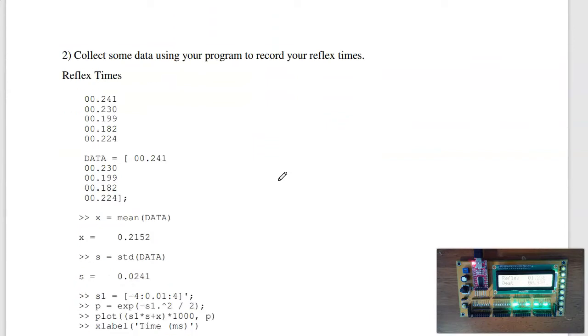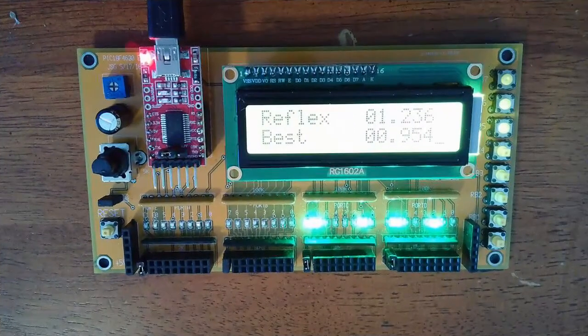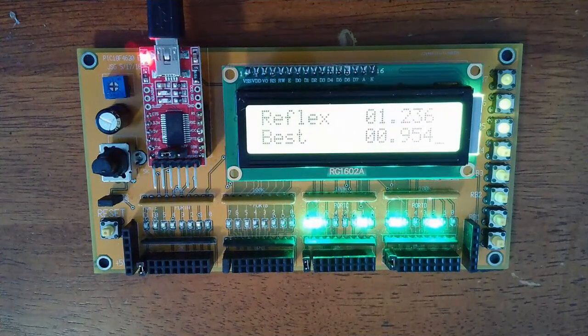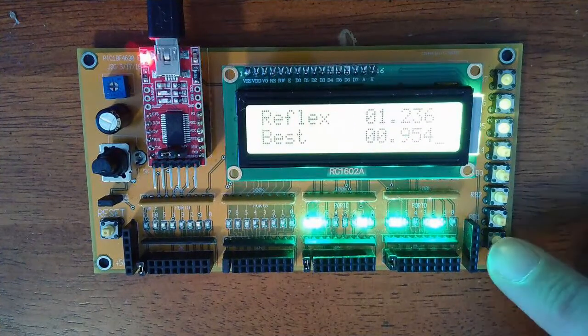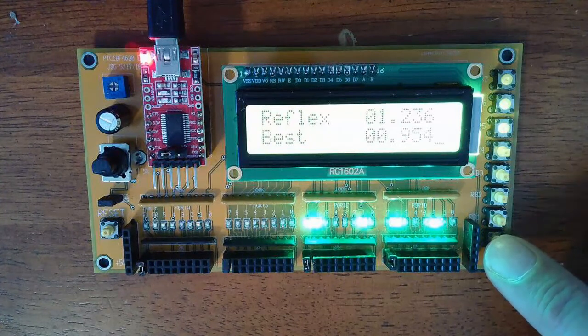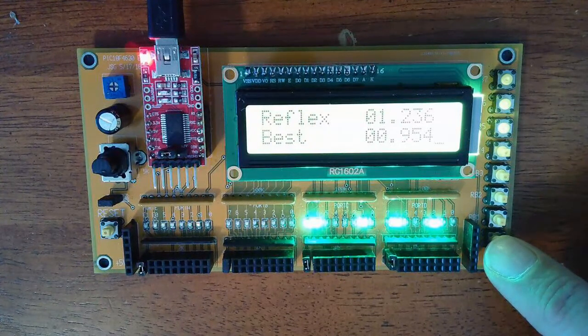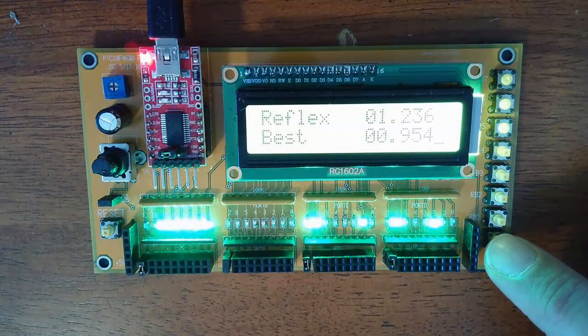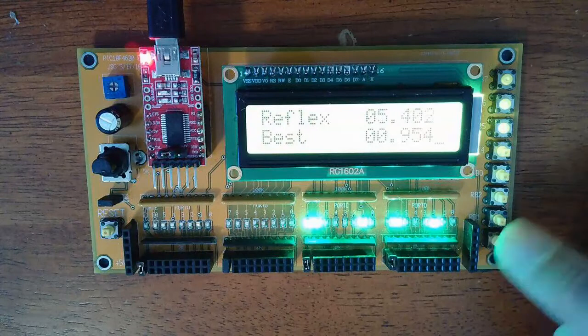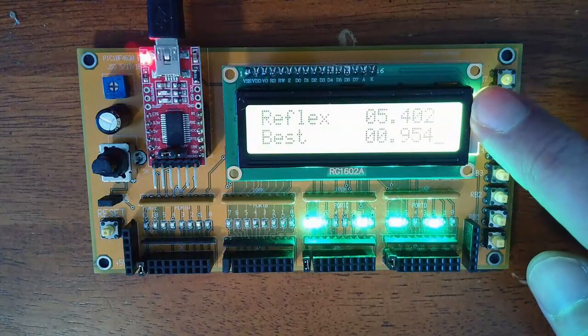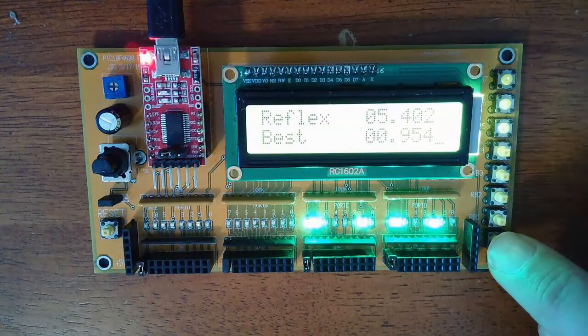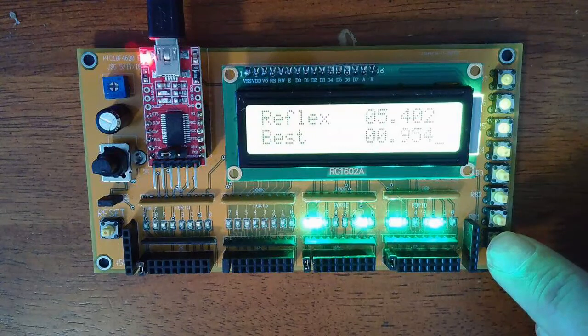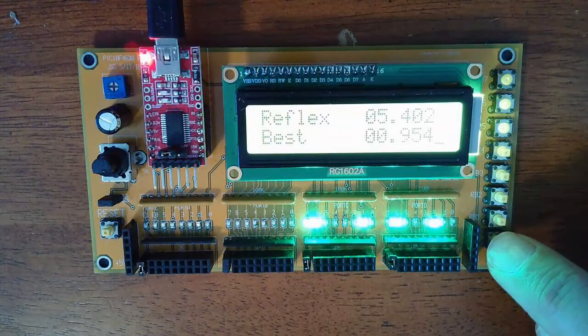Once you have your program running, now collect some data. And actually, before I collect some data, I want to verify that it really is measuring time in milliseconds. So 1, 2, 3, 4, 5. That should be 5 seconds. Let's try it for 10 seconds, see if that works.